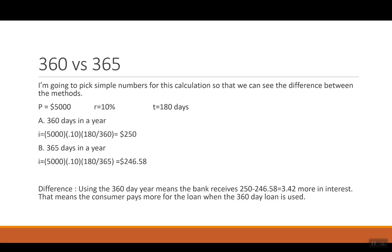If we switch it to 365, same $5,000 as my P, we didn't say investments, borrowed, 10% for the interest rate, but now 180 over 365 is $246.58.